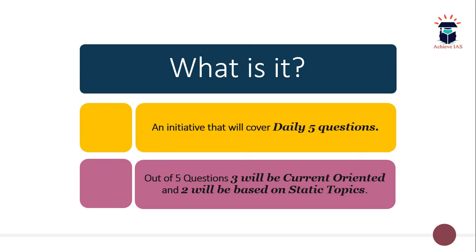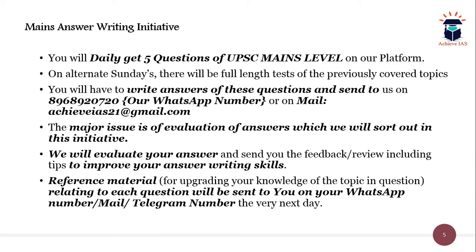We have prepared a 99-day super plan covering your entire syllabus from GS1 to GS4, with each day allocated to a particular topic. You complete that topic during the day, then in the evening write answers and evaluate your performance. Daily five questions are given on our platform, and on alternate Sundays we take a full-length test of previously covered topics — this week it will be on GS3.